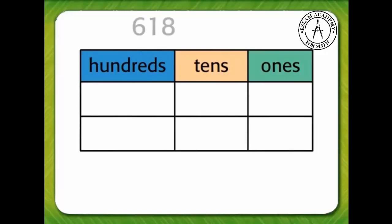Let's compare 618 and 634. In 618 there are six hundreds, one ten and eight ones. In 634 there are six hundreds, three tens and four ones.